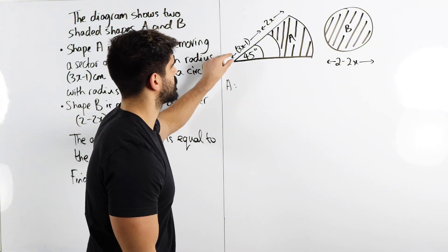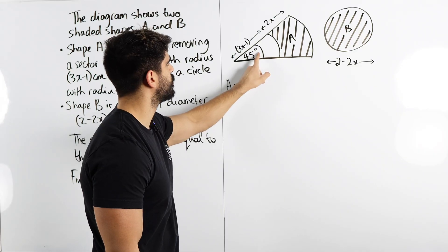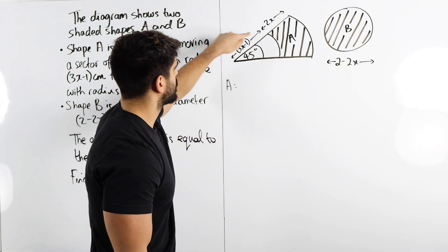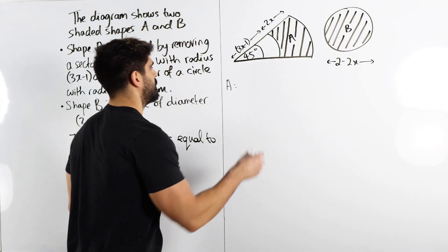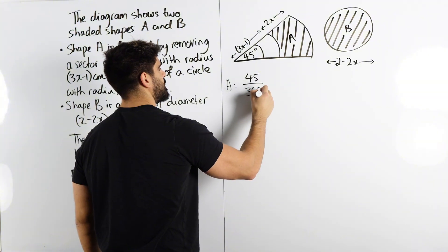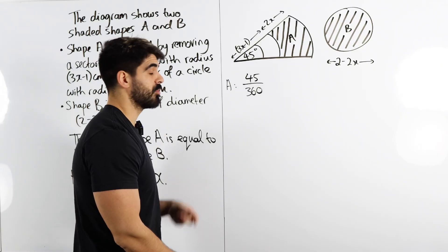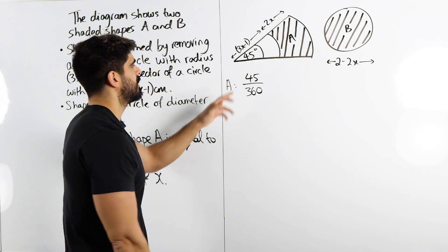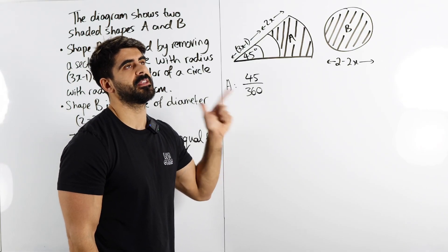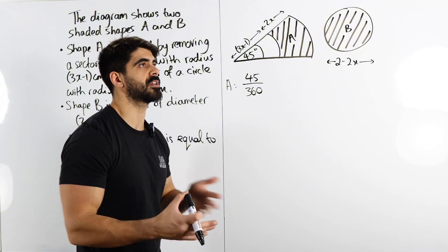A sector is just a fraction of a full circle. Based on this angle, what fraction of a full circle is it? Well, a full circle is 360 degrees. We're doing 45 over 360, and that fraction gives us 1 eighth — because 45 times 2 is 90, and 90 times 4 gives you 360, and 2 times 4 is 8.